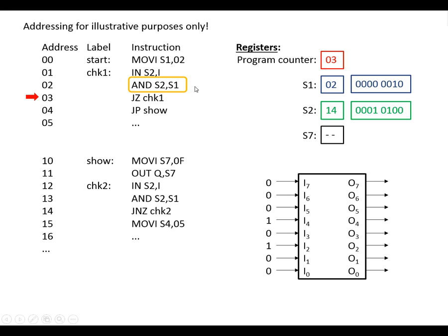The next instruction carries out an AND between two registers and the result comes out as zero. The following instruction is JumpZ check_one — jump if the result of the previous operation was zero, to the address of this label. The result was zero, so we find where check_one is — it's at address zero one — and we load the program counter with that address corresponding to check_one.